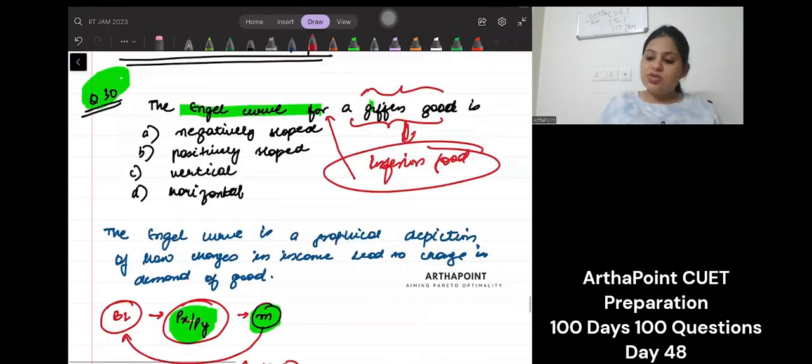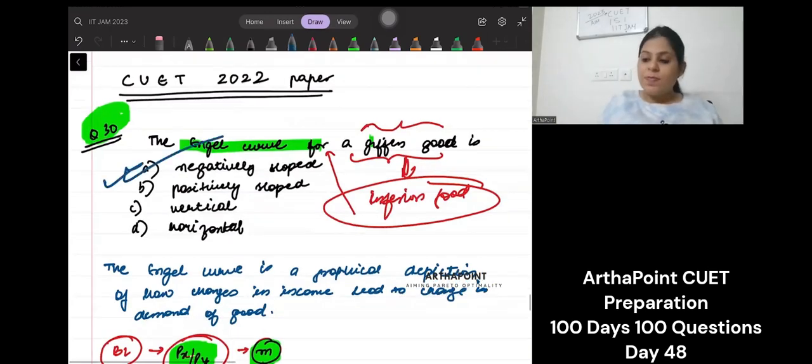And if a good is an inferior good, then its Engel curve should be downward sloping. So answer to this question will be negatively sloped. The answer is A. It is negatively sloped.